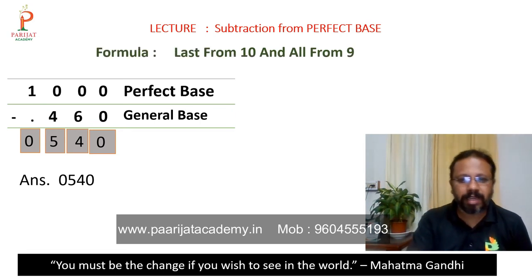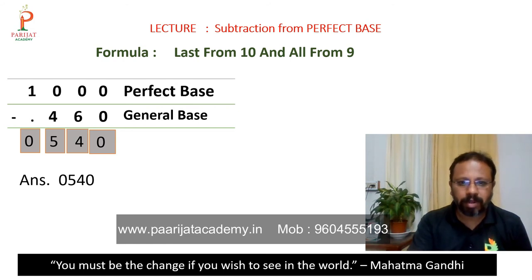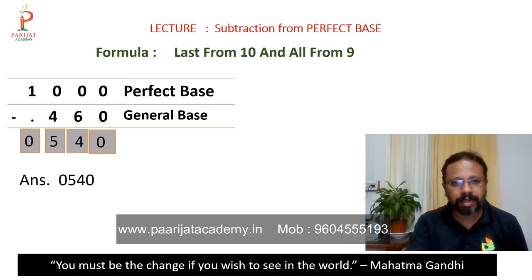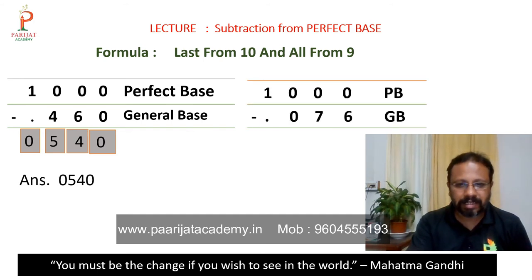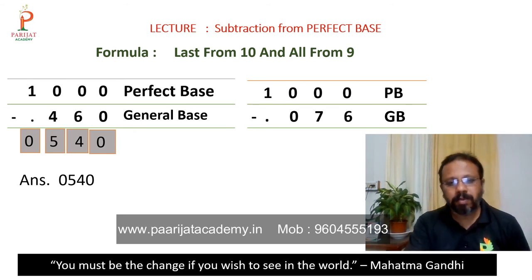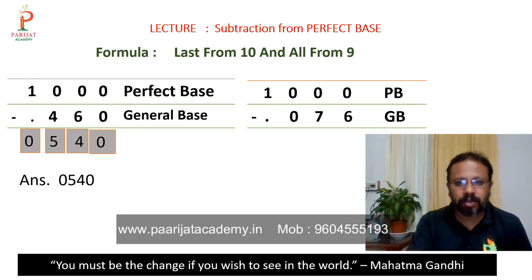This is the universal subtraction formula — last from ten and all from nine. Keep it in mind; this formula never changes. Next: one thousand minus seventy-six. I have purposefully placed a zero before seventy-six, because nothing means zero everywhere.